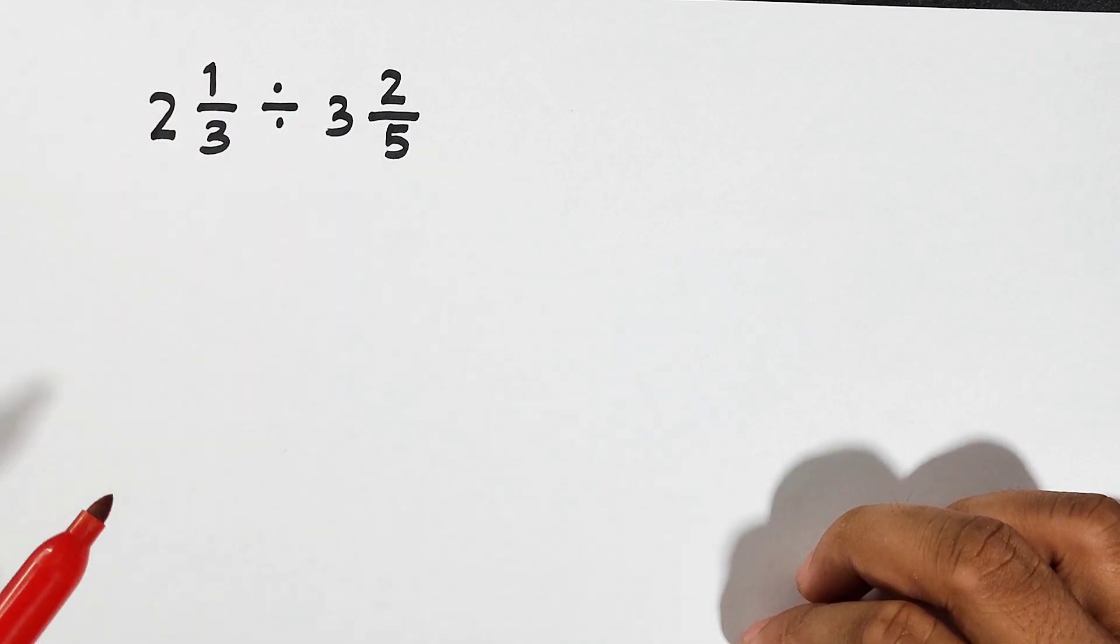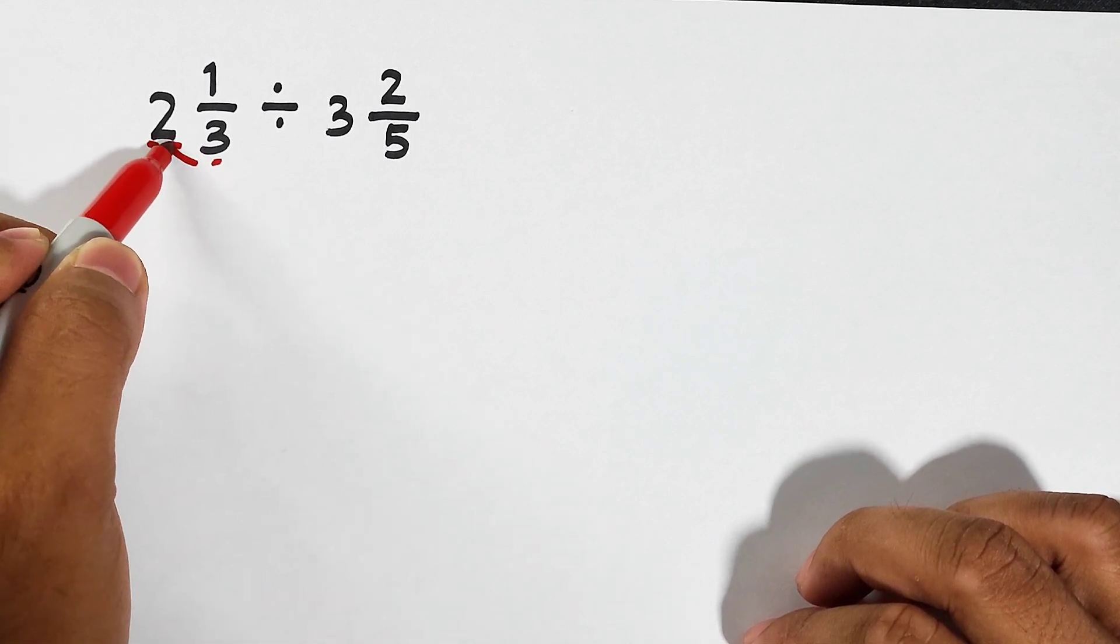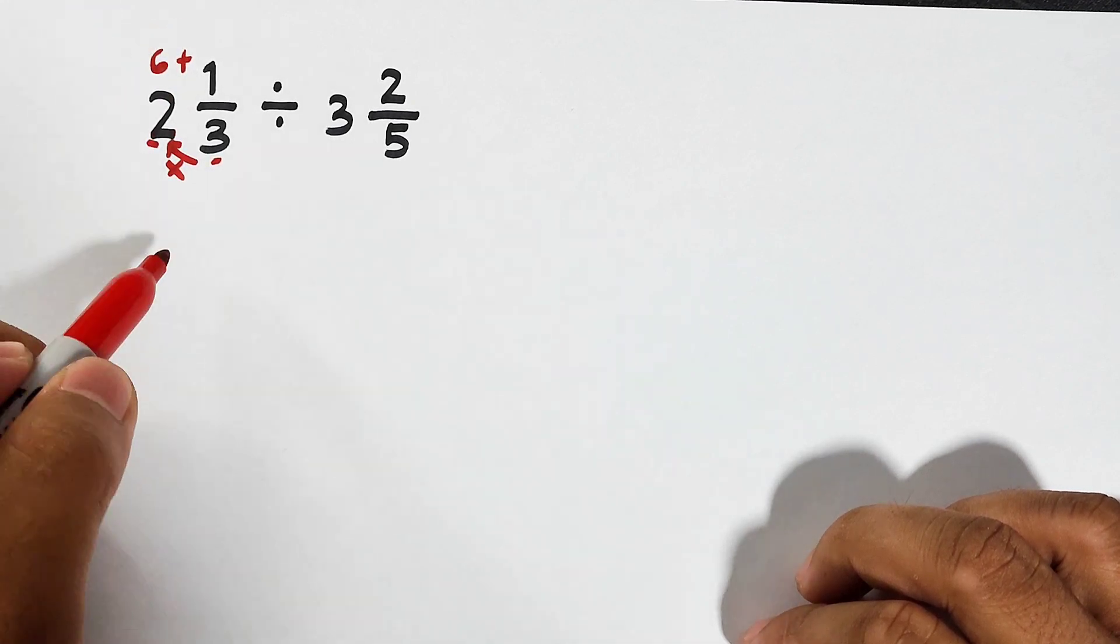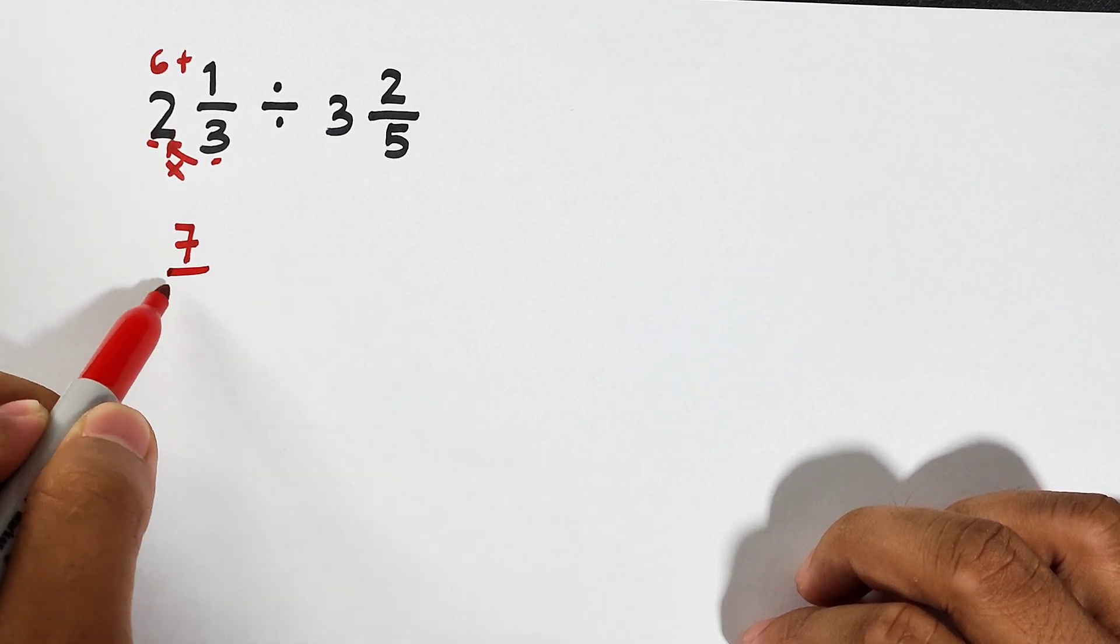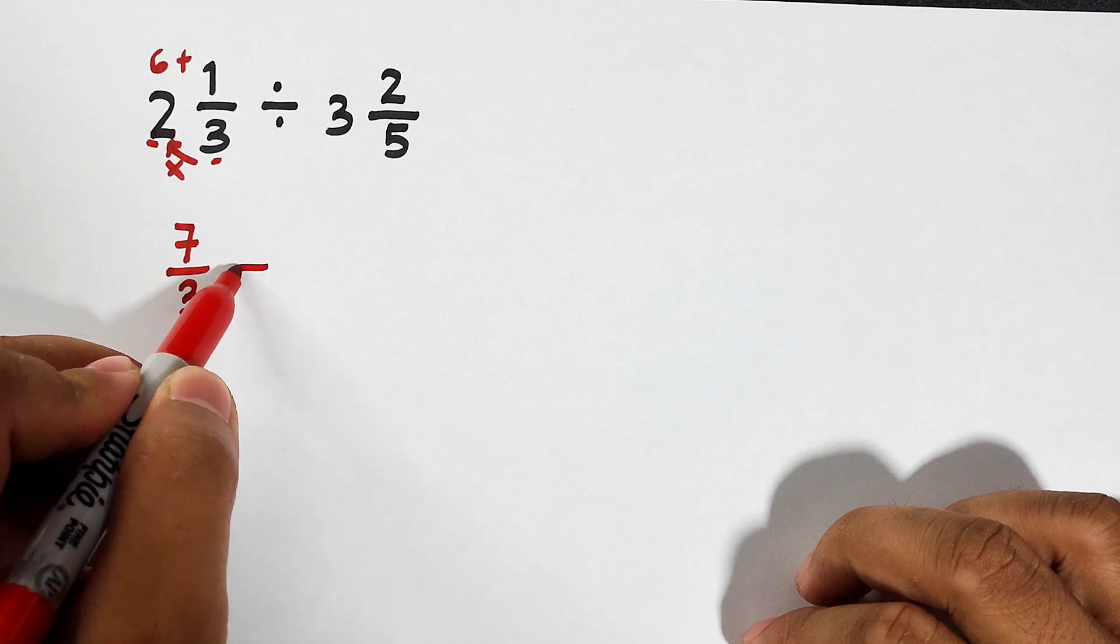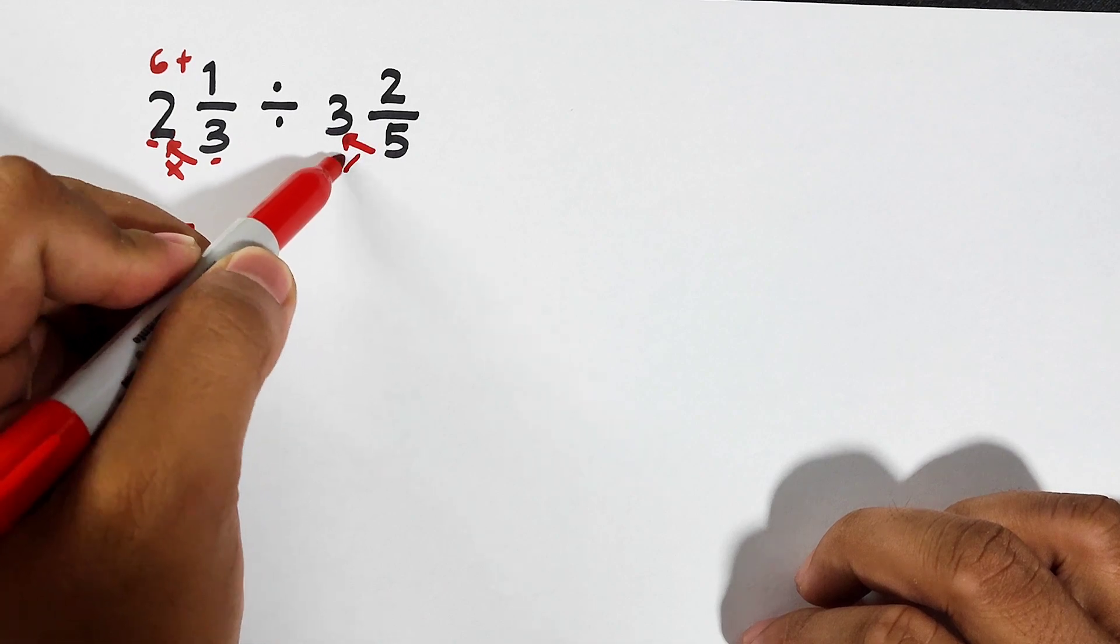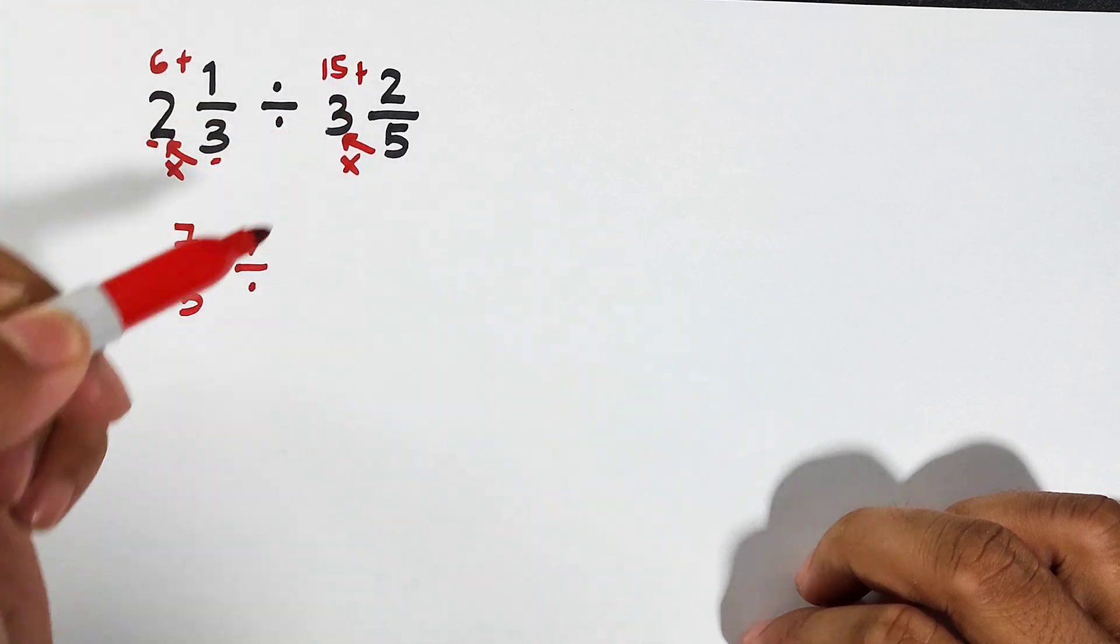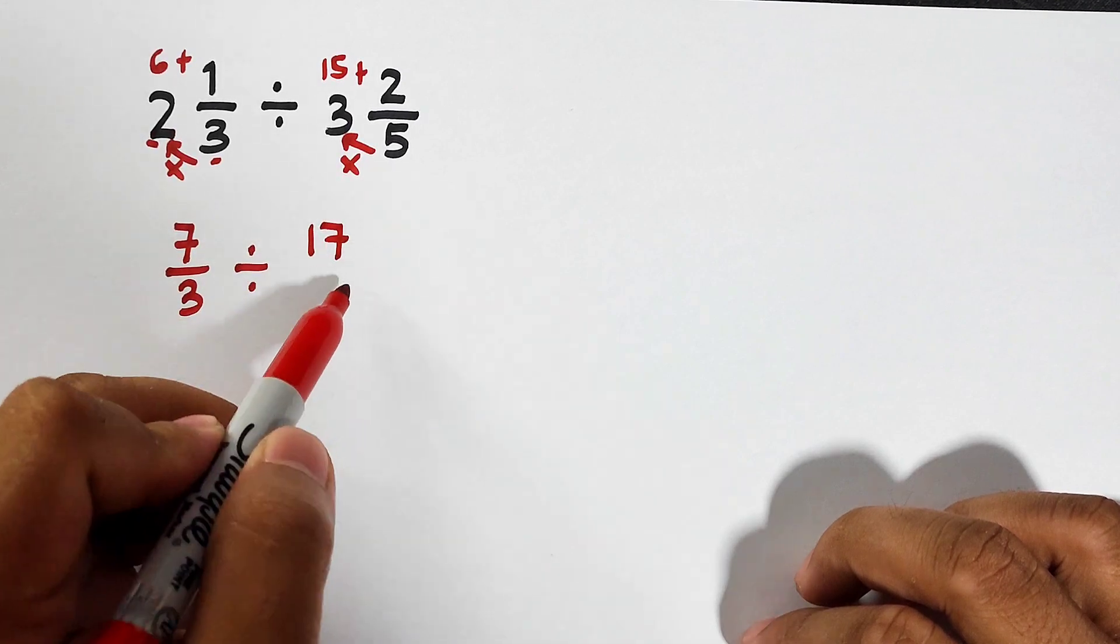So how to do that? Multiply the denominator and the whole number. 3 times 2, that is equal to 6. Then add 6 and 1, that is equal to 7. Copy your original denominator, which is 3. Copy your division symbol, then convert the other mixed number. 5 times 3, that is equal to 15, plus 2, that is equal to 17, and then over 5.